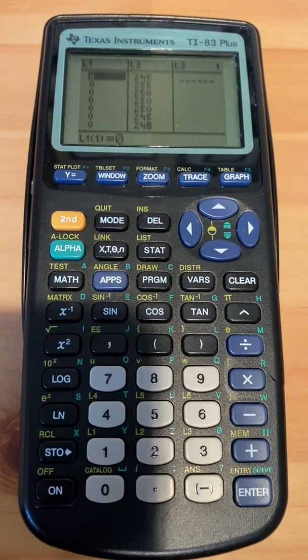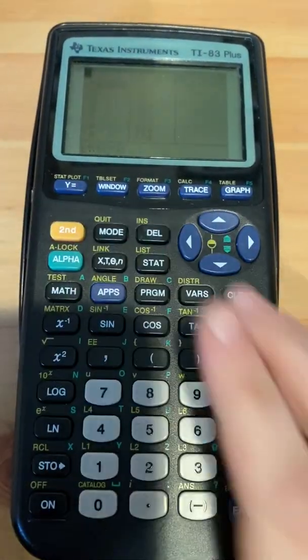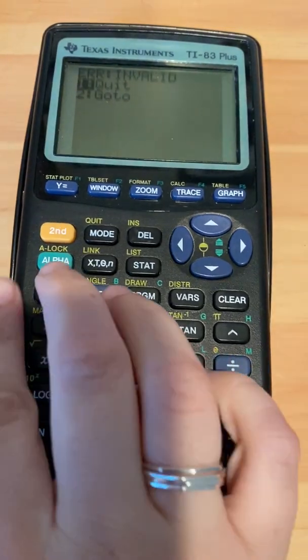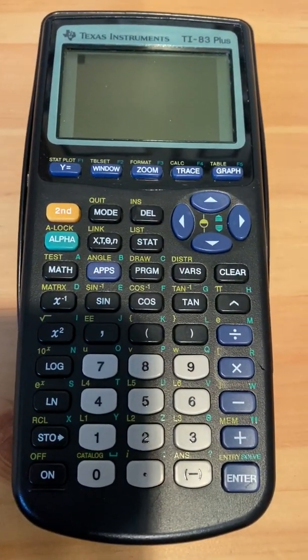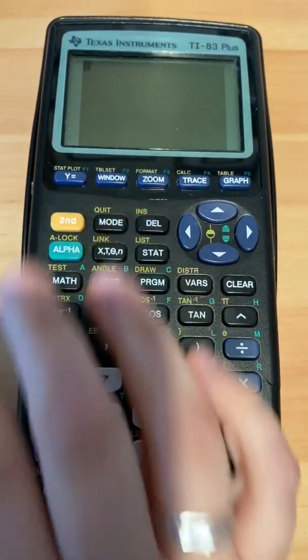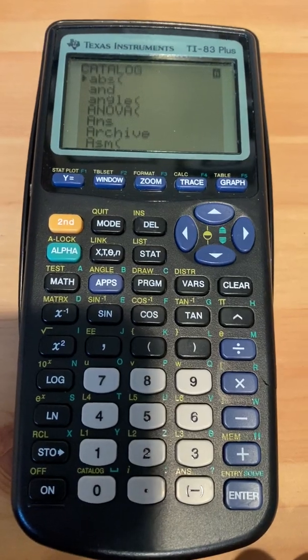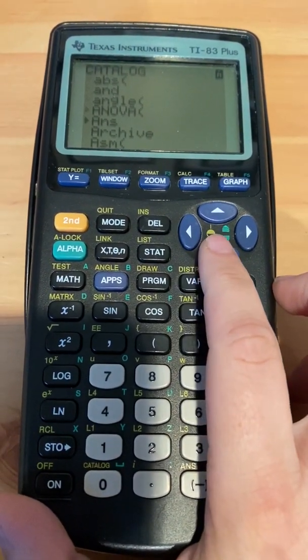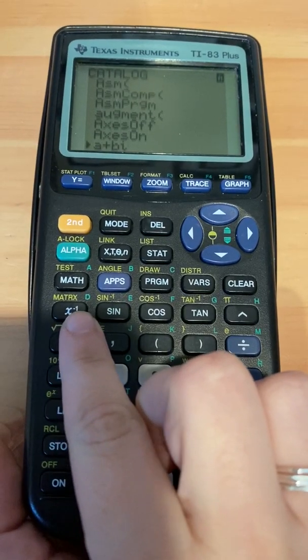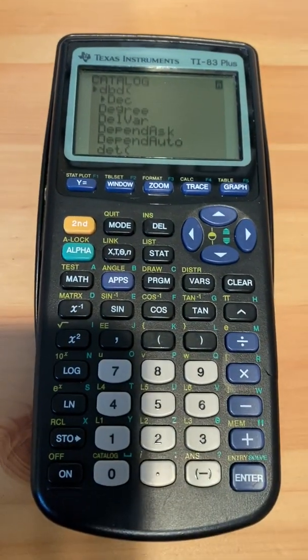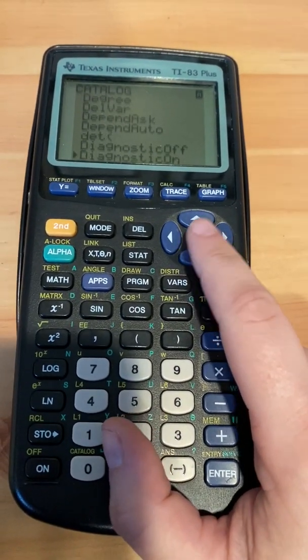The second thing that you want to make sure you have done is that your diagnostics are on. So one way to do that is you want to go to second catalog, and then instead of scrolling down all the way to all the things that start with D, you can go to that X to the negative one button. See how there's that little D above it? It'll take you straight to all of the functions that start with D.